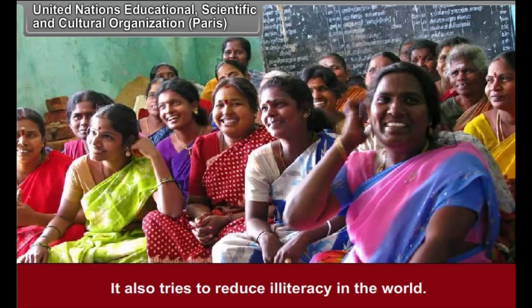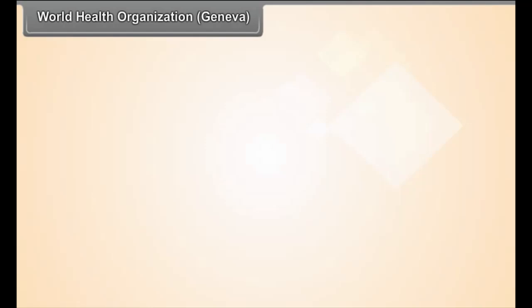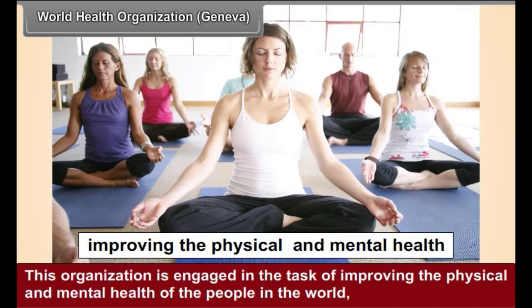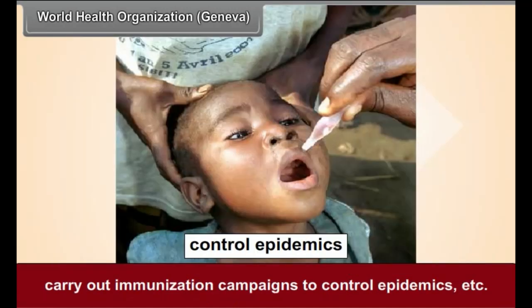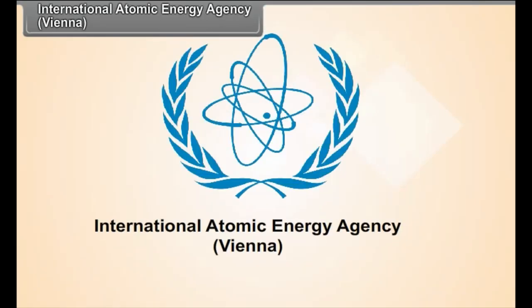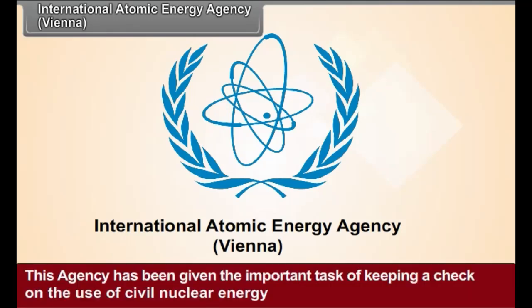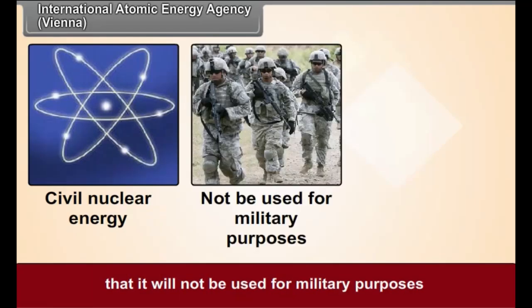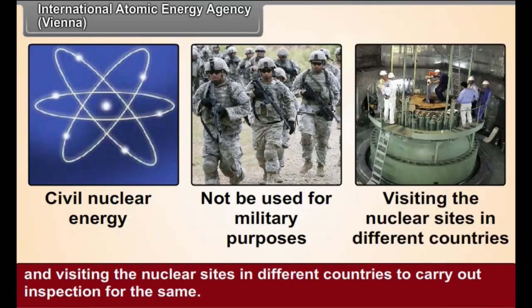UNESCO also tries to reduce illiteracy in the world. World Health Organization, Geneva: This organization is engaged in the task of improving the physical and mental health of the people in the world and carries out immunization campaigns to control epidemics. International Atomic Energy Agency, Vienna: This agency has been given the important task of keeping a check on the use of civil nuclear energy so that it will not be used for military purposes, and visiting nuclear sites in different countries to carry out inspection for the same.